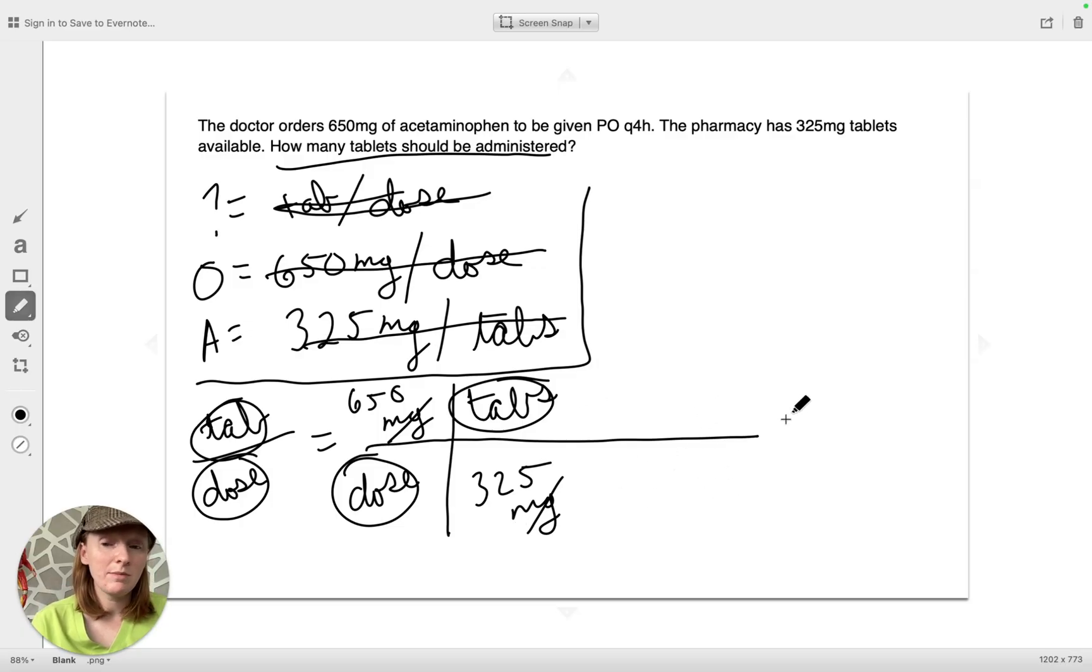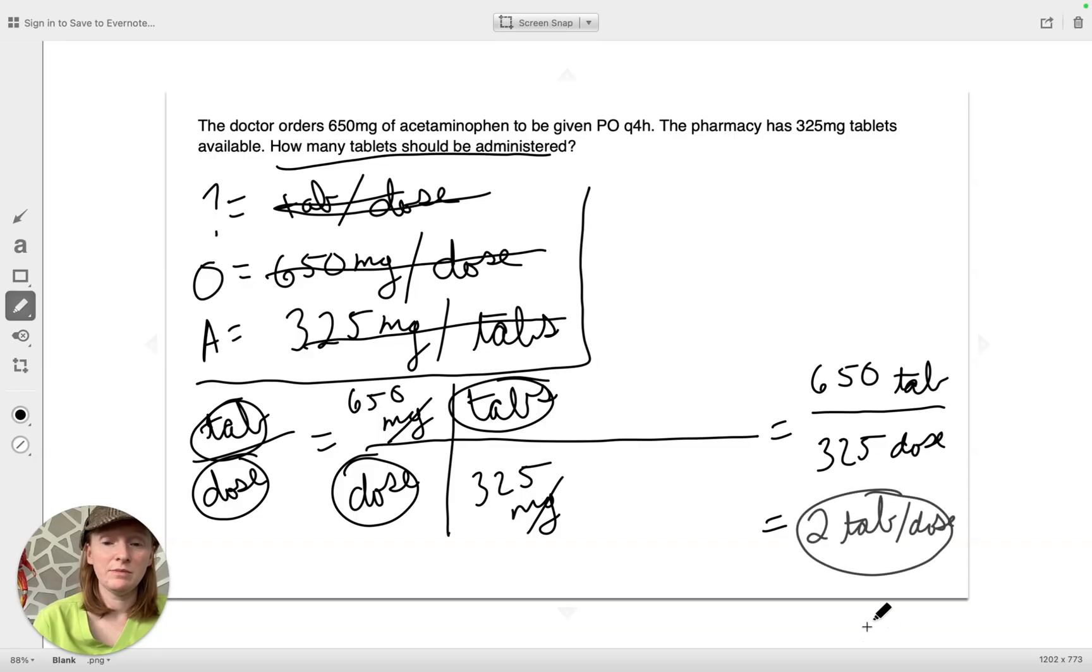So now we get to the math part. And the math is easy because it's multiply across the top, multiply across the bottom. And we get rid of everything we eliminated. So no more milligrams. But we don't want naked numbers. So we keep our tablets. We got, this was easy math multiplication. I can do it in my head. We have dose. And then we divide. 650 divided 325. Don't feel bad if you want to use a calculator. But that comes out to two tablets per dose. And that is our final answer for this PO problem.